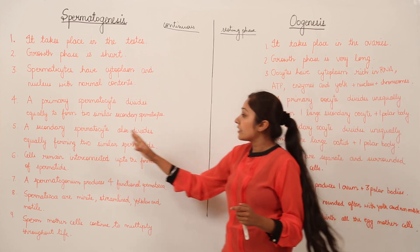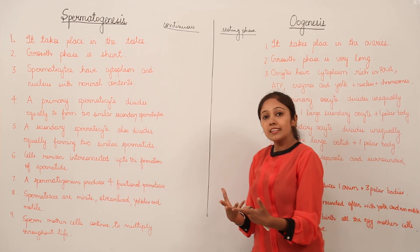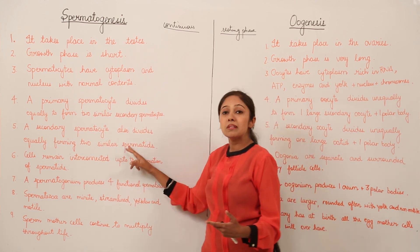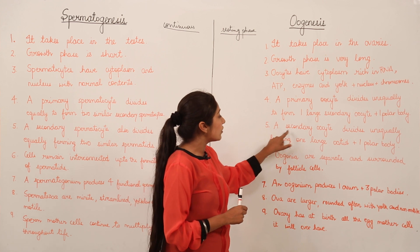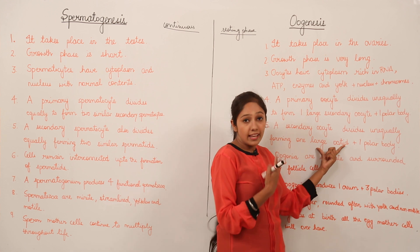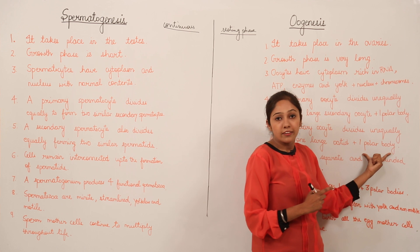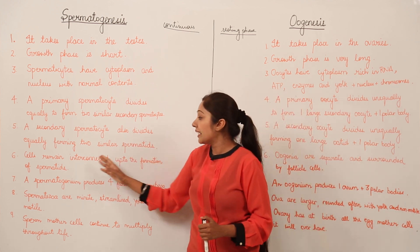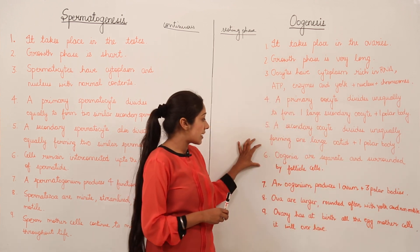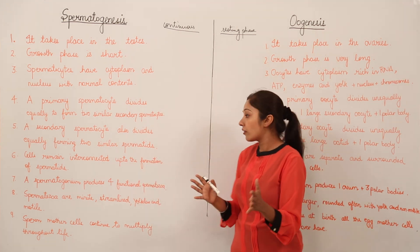Fifth point: a secondary spermatocyte also divides equally, forming two similar spermatocytes — again an equal division. But a secondary oocyte divides unequally again to form one large functional oocyte and one non-functional minute polar body. Additionally, cells remain interconnected up to the formation of spermatocytes in spermatogenesis, whereas oogonia are separate and surrounded by follicle cells.